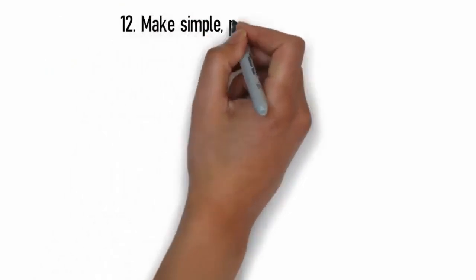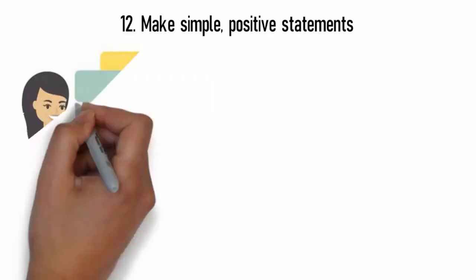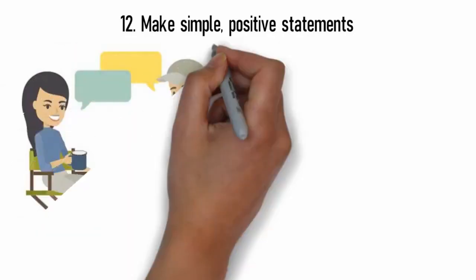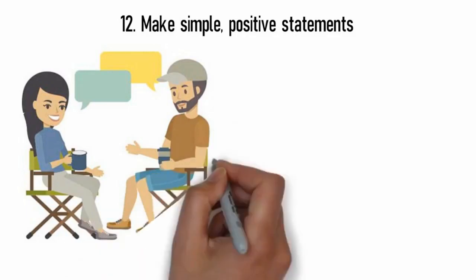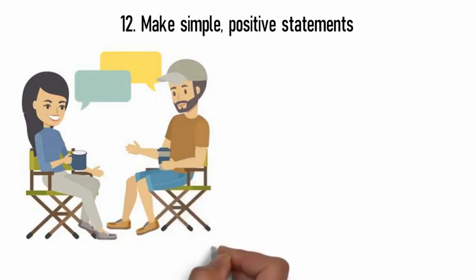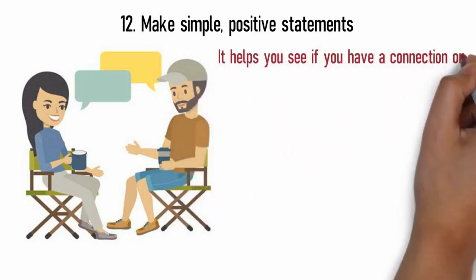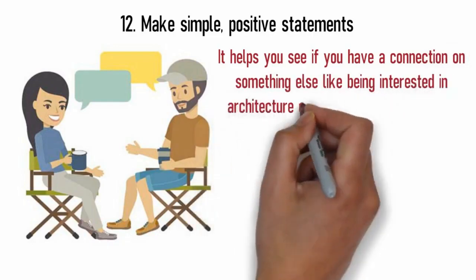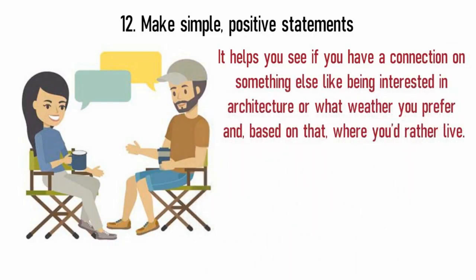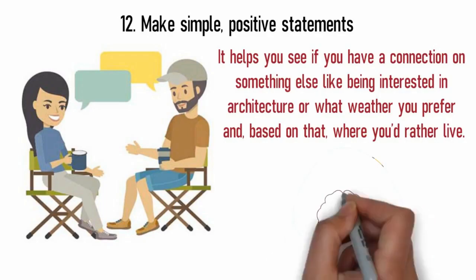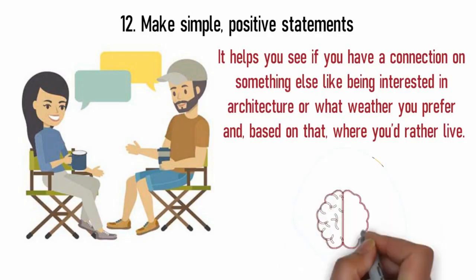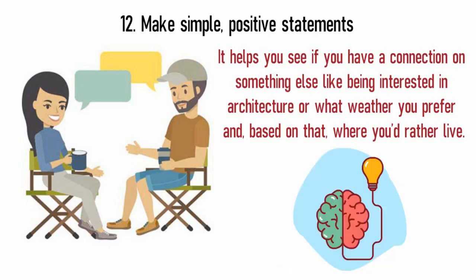12. Make simple positive statements. I think of these as conversation buffers. They keep the conversation going, but they're not too deep. A simple positive statement could be, 'What a cool house' or 'It's sunny today.' This is a fairly organic way to move on to new topics. It helps you see if you have a connection on something else, like being interested in architecture or what weather you prefer, and based on that, where you'd rather live. You don't need to fabricate statements. Your mind already makes statements about things. That's how the mind works. Feel free to let those thoughts out.